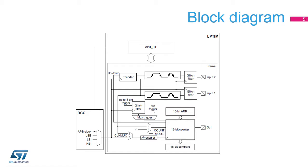The low-power timer peripheral embeds a 16-bit counter fed through a power-of-2 prescaler. It features a 16-bit auto-reload register and a 16-bit compare register used to set the period and duty cycle, respectively, for a PWM waveform signal output on the timer's output. The low-power timer also features an encoder mode function that can interface with incremental quadrature encoder sensors using the peripheral's Input-1 and Input-2 inputs. Both inputs feature glitch-filtering circuitry.